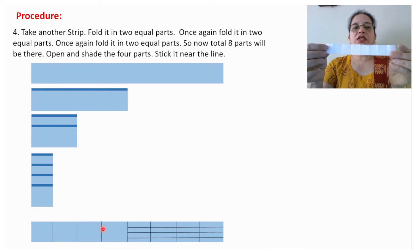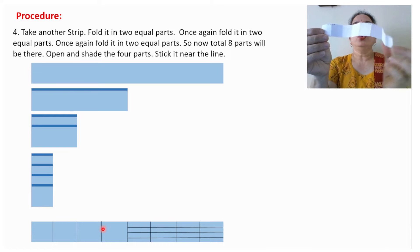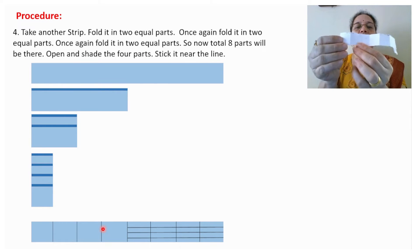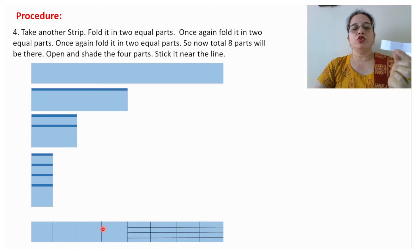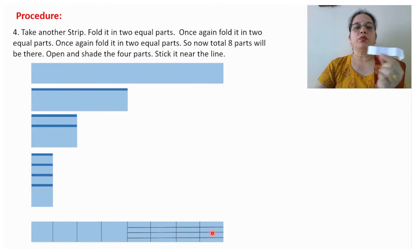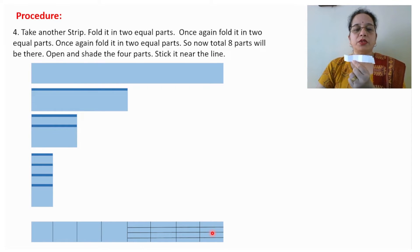Now shade four parts — one, two, three, four. I have shaded these four parts and now I will stick this strip along with the other two strips.